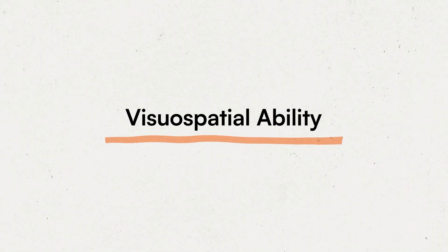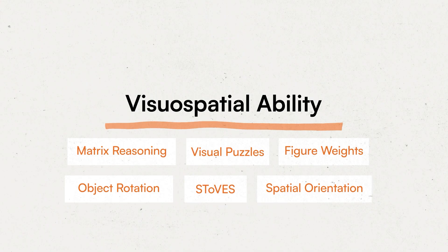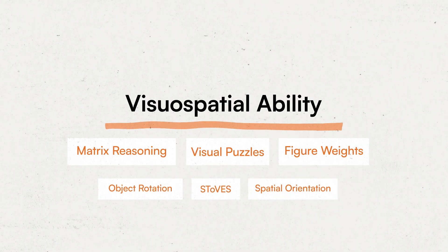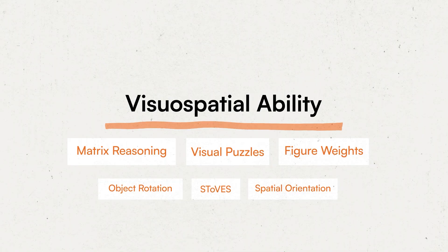The second index is the Visual Spatial Ability Index, which consists of six subtests. The first three are Matrix Reasoning, Visual Puzzles, and Figure Weight subtests. All of these subtests consist of multiple choice questions where the examinee has to solve problems that refer to pictures.